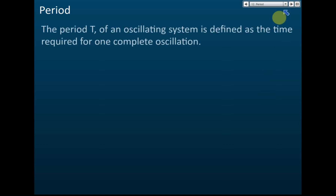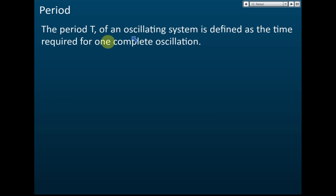So what does it mean by period? Period is usually denoted by the symbol T. The period T of an oscillating system is defined as the time required for one complete oscillation. You need to know what a complete oscillation is before you can determine the period.